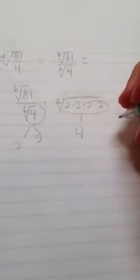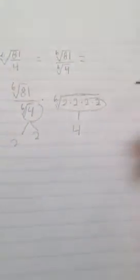So if we do 2 times 2 times 2 times 2, we get 16. So we're going to multiply that equation by the sixth root of 16 like this.